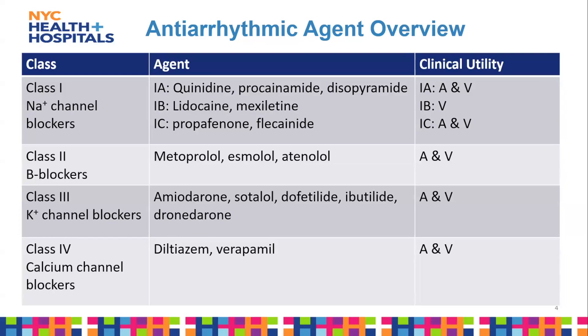Class 1a includes quinidine, procainamide, and disopyramide, which cause moderate blockade of fast sodium channels. These are your most proarrhythmic agents because they cause more prolonged QTc interval prolongation, so they're not used as frequently. Although procainamide is starting to come back into use more for AFib and V-tach.